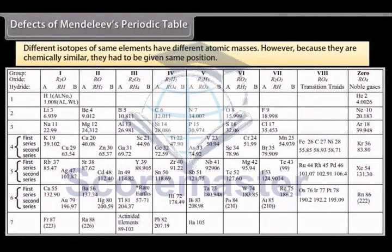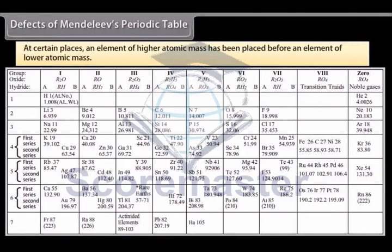However, because they are chemically similar, they had to be given same position. At certain places, an element of higher atomic mass has been placed before an element of lower atomic mass. For example, argon 39.91 is placed before potassium 39.1.